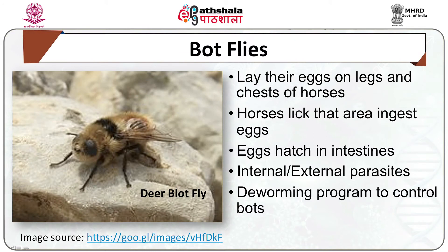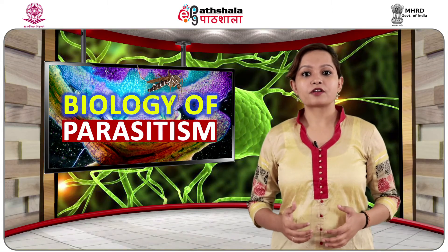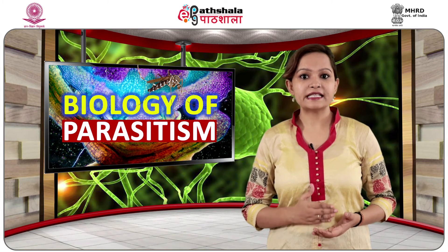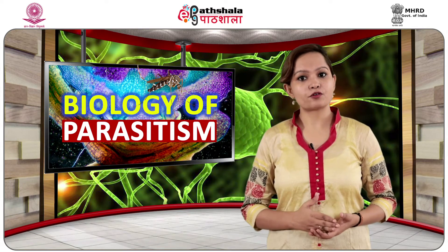Now we come to the blowfly. These are small but robust and metallic in appearance. They prefer to lay their eggs over decaying matter and play an important role in recycling. However, they are vectors of a number of diseases and cause nuisance in animal farms. The larvae feed on moist, living or dead flesh. Blowflies cause myiasis, which is infestation of live animals from infected sores. The major genera responsible are Calliphora, Chrysomya, Cynomya, Lucilia, Phormia, and Protophormia.